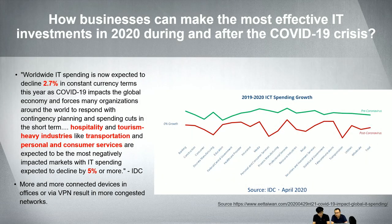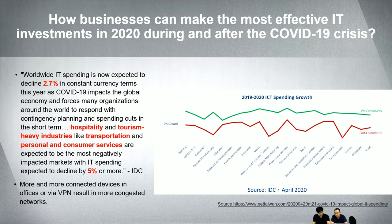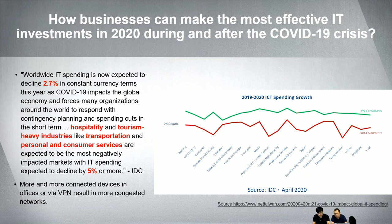Let me begin with IDC research made in April this year. During COVID-19, so many countries and organizations have been affected. Research shows that IT spending in many regions will decrease by as much as 2.7%, and in industries such as hospitality, hotels, tourism, and transportation, they'll be affected by as much as 5%. It's now more important than ever to spend your budget carefully by choosing the right products.